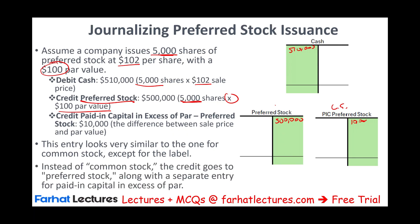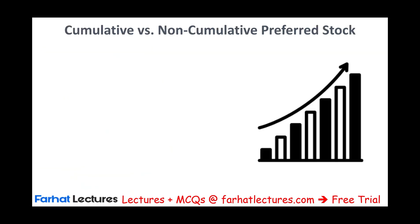So this is the entry to issue preferred stock, which is basically the same as issuing common stock except the labels are different. Instead of common stock, the credit goes to preferred stock, along with a separate entry to paid-in capital in excess of par — specifically, excess of par preferred stock. Preferred stock comes in many different flavors because it's based on a contract.